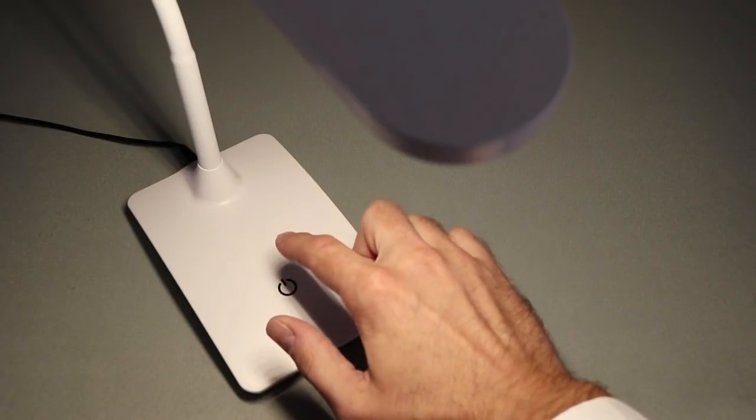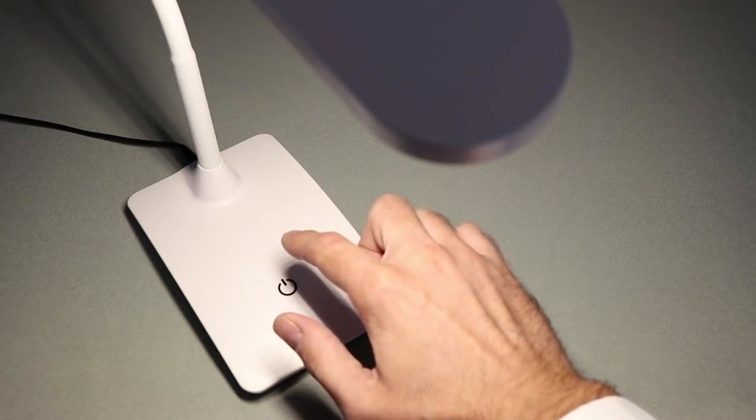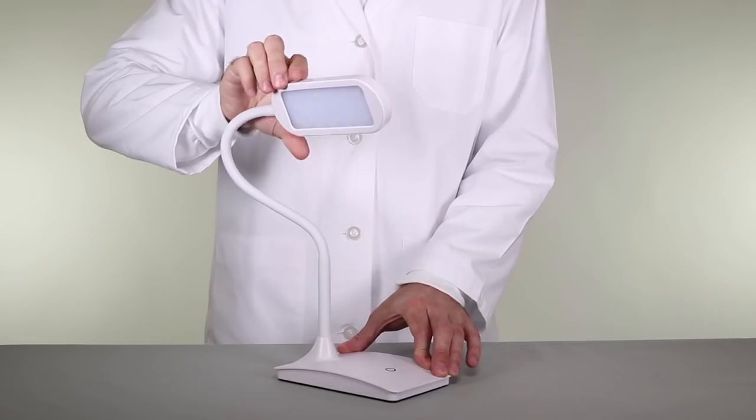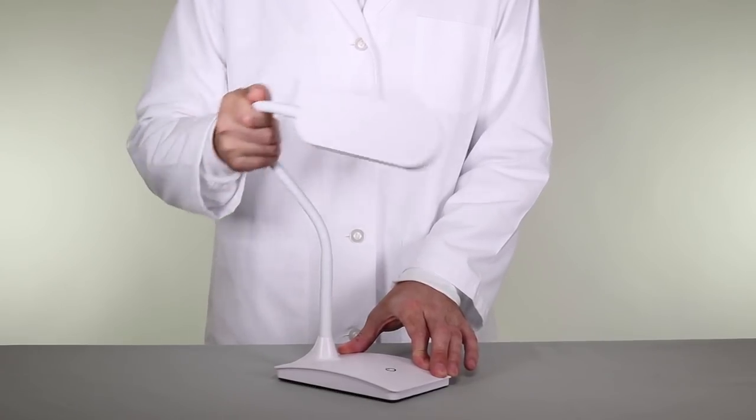Designed to adjust to your needs, the three-level touch dimmer goes from soft to bright, and the extended neck can be shaped to your preference.